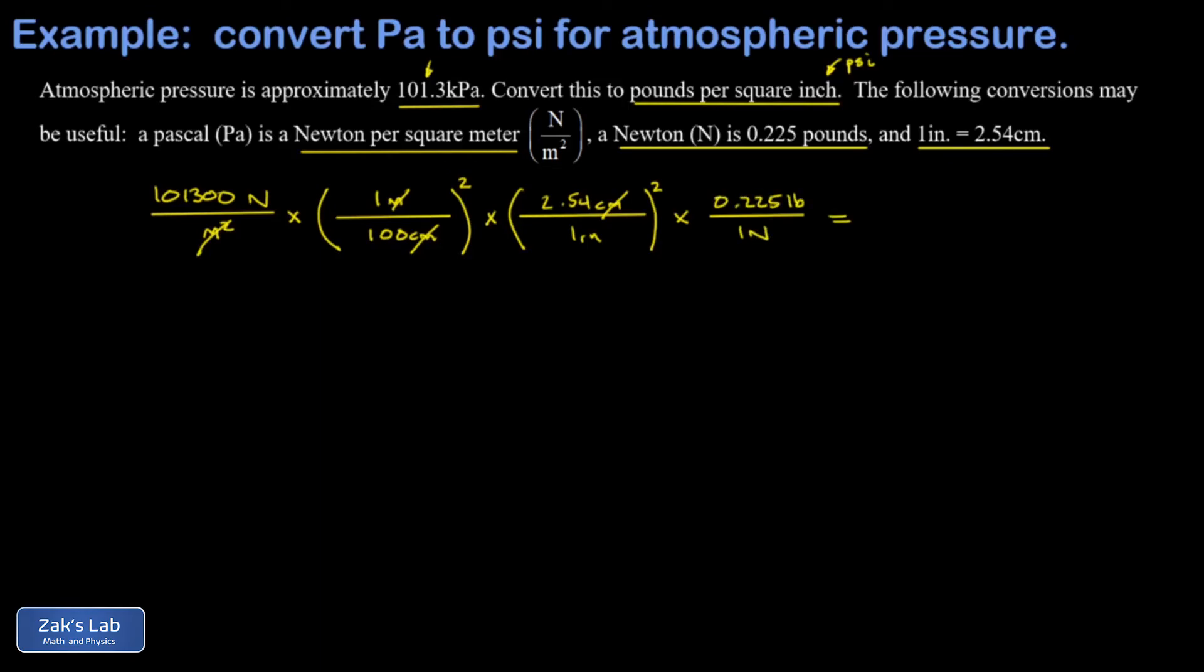After smashing all these numbers together in a calculator, taking 101,300 times 2.54 squared times 0.225 and then dividing by 100 squared, I get 14.7. And my surviving units here, after those newtons are gone, are pounds in the numerator and inches squared in the denominator. So this is pounds per square inch, which is normally written as psi. So there's our atmospheric pressure in psi, and we're done.